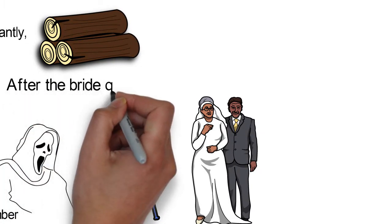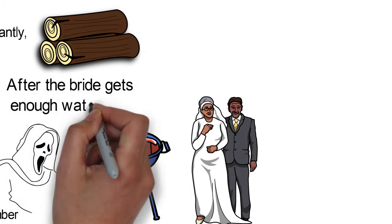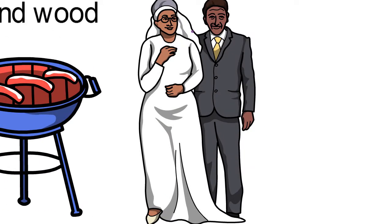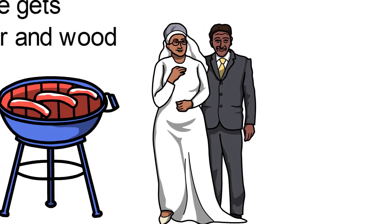After the bride gets enough water and wood, and does some other tasks assigned to her, she will publicly walk to her groom, while her grandmother sweeps the floor in front of her to symbolize a clear path. The big ceremony then begins with lots of performances and feasting.